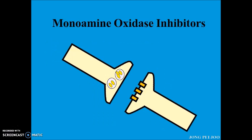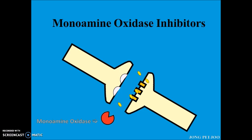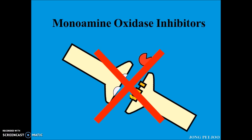Before we discuss the mechanism of action of monoamine oxidase inhibitors, we have to understand the role of monoamine oxidase. Monoamine oxidase oxidatively deaminates and inactivates any excess neurotransmitters to prevent them from leaking out of synaptic vesicles. However, this causes a lack of neurotransmitters in the synapse, which can be prevented by monoamine oxidase inhibitors.